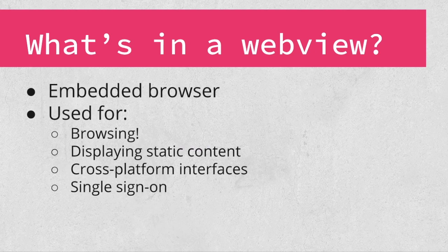In mobile applications, a web view is an embedded browser used by the application for a number of purposes. The most common are to allow the user to browse to a website without leaving the application, or to display static content from either the web or a local file — for instance, showing a privacy policy loaded from a website. You'll also encounter applications using web views to present a consistent interface on both Android and iOS, and to provide a way for users to leverage single sign-on credentials from the browser.